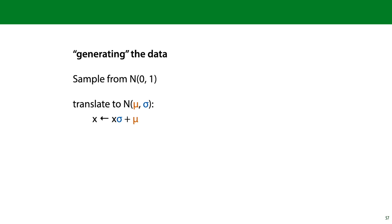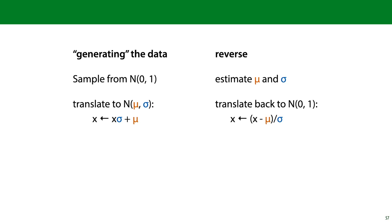What we want to do when we standardize the data is essentially reverse this process. To do so, we estimate the mean and the standard deviation from the data, and then reverse the transformation. We apply the inverse operations in reverse order: the last operation on the left was summing mu, so we start by subtracting mu, and then apply the reverse of the sigma operation — we divide by sigma. This is the inverse of the original transformation.